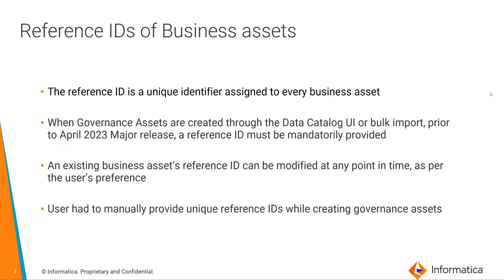The reference ID of a business asset is a unique identifier assigned to every business asset in data catalog. When governance assets are created through the data catalog UI or bulk import, prior to the April 2023 major release, a reference ID had to be mandatorily provided. An existing business asset's reference ID can be modified at any point as per the user's preference. Since this is a unique identifier, the user had to manually provide these unique reference IDs while creating governance assets.